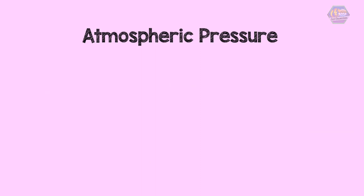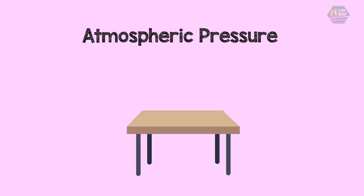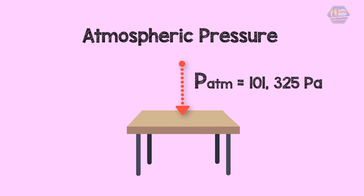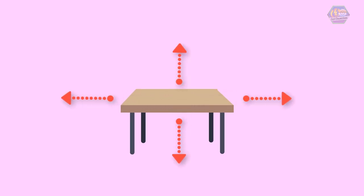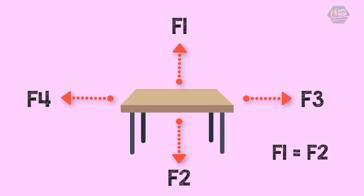For example, you have a 2-meter by 2-meter table with atmospheric pressure of 101,325 pascals. If you're asking why the table didn't collapse even with that large pressure — as mentioned, atmospheric pressure acts in every direction. If there is a force pushing downward, there is an equal force pushing upward, so the forces are balanced and the table doesn't collapse.